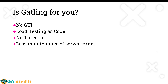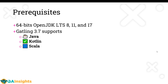It purely depends on what you need for your performance testing. To get started with Gatling, there are a couple of prerequisites. You need to install OpenJDK version 8, 11, or 17 — 64-bit, long-term support versions. Gatling 3.7 supports Java, Kotlin, and Scala.